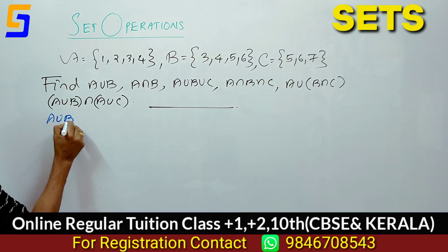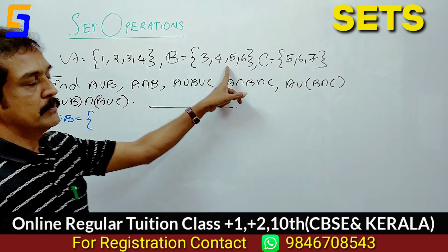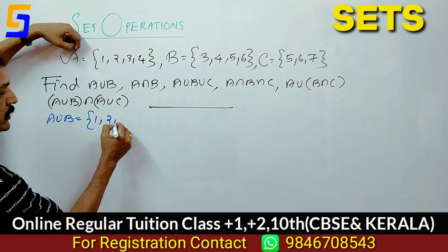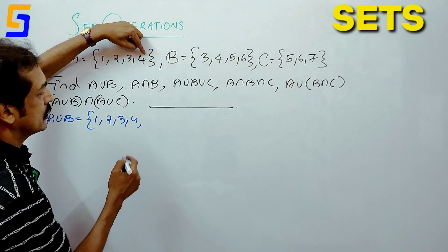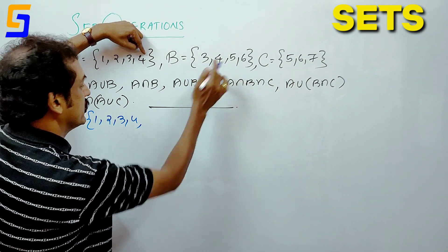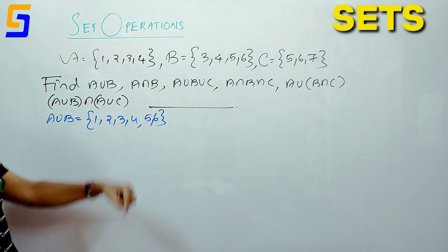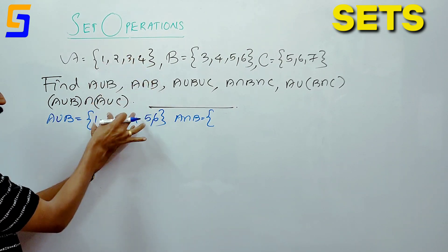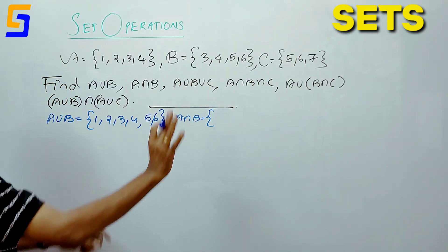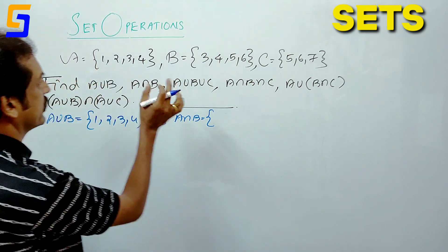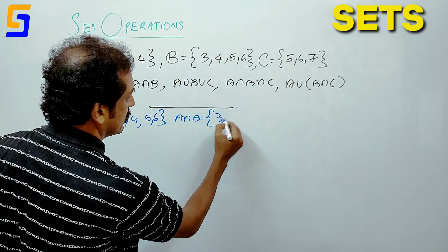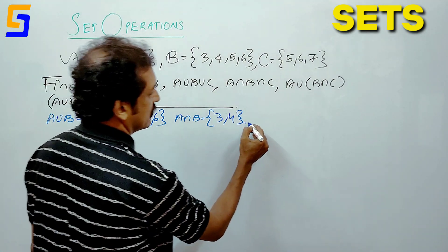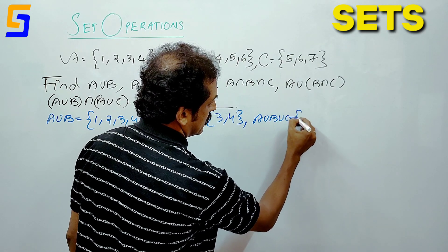Firstly, A union B: A equals {1, 2, 3, 4} and B equals {3, 4, 5, 6}. All members combined give one set. Next, A intersection B: B shares elements 3 and 4 with A. Then A union B union C: combining all three sets. You get members 1, 2, 3, 4, 5, 6, 7.